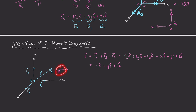Now for the force vector f: if we break it into components, it has fx along x, fy along y, and fz along z. In unit vector notation, fx = fx·i, fy = fy·j, and fz = fz·k. So f = fx·i + fy·j + fz·k.